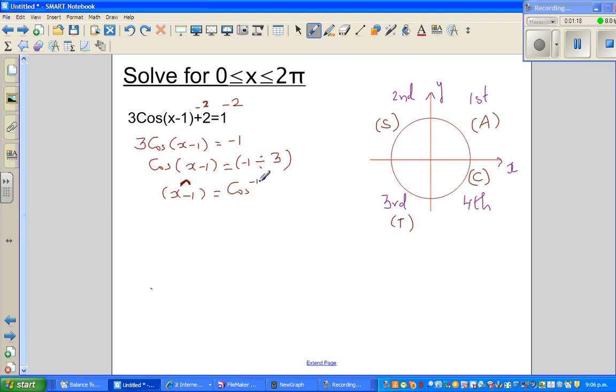As you should know, you are taking cos inverse of both sides. Cos inverse of 1 divided by 3. We are ignoring the negative. We will come to the negative later on. So this is simple algebraic manipulation.